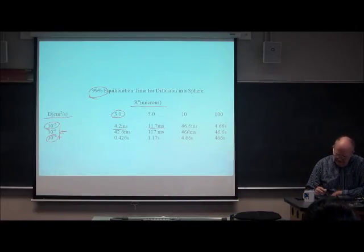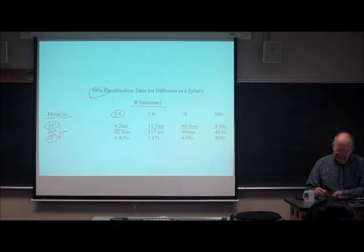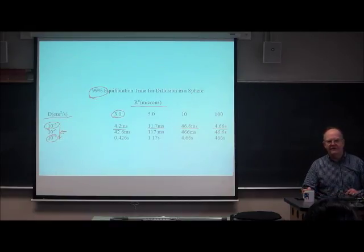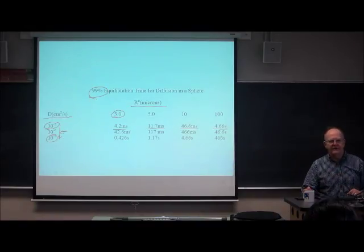You can see that both the diffusion coefficient and the size of the particle are very important. But the time goes with the square of the size. Going from a 10-micron to 100-micron particle, we go from 46 milliseconds to 4.6 seconds — that's a big increase in equilibration time.